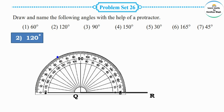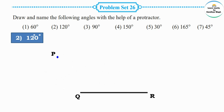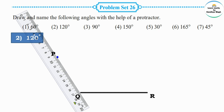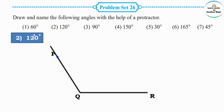Mark one dot at the 120 degree position. Lift the protractor and draw a line with the help of a ruler from point Q through the marking point P of angle 120 degrees. The angle measure is 120 degrees, and the angle is PQR. The vertex is Q, and the arms are QP and QR.